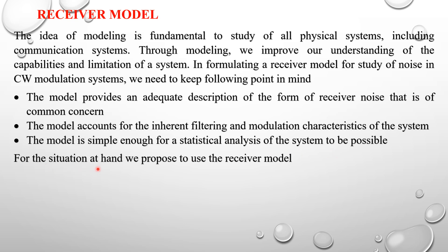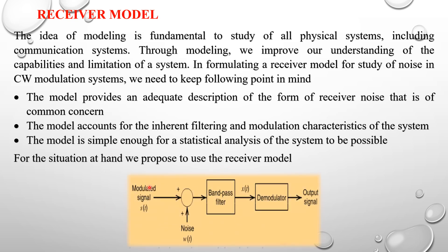For the situation at hand, we use the receiver model. It consists of an adder, a bandpass filter, and a demodulator. The adder inputs are the modulated signal s(t) and noise w(t). The output of the adder is applied through the bandpass filter to the demodulator circuit. Across the demodulator circuit, we receive the modulating signal m'(t). So, for example, m(t) is the transmitted signal and the received signal is m'(t).